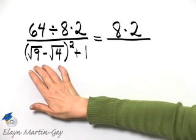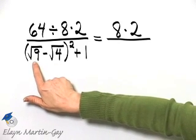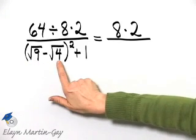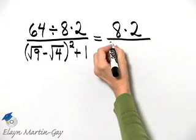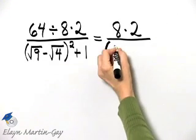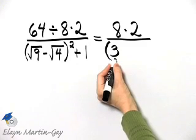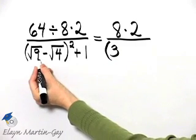Within the set of parentheses, I will evaluate this square root and this square root. So what is the square root of 9? The square root of 9 is 3 because 3 times 3 is 9.